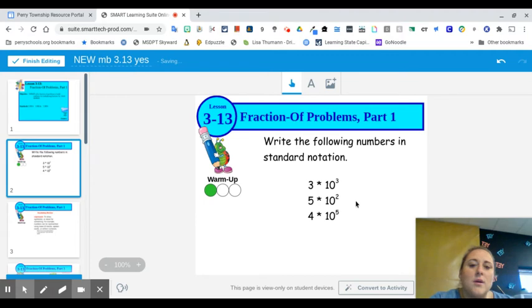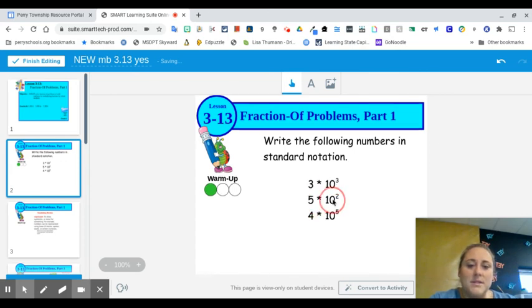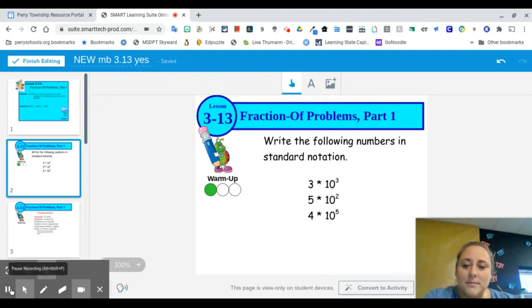Let's start off with our warm-up. We are to write the following numbers in standard notation. So our first one here, we have 3 times 10 to the 3rd power. Then we have 5 times 10 to the 2nd, and 4 times 10 to the 5th. Take a second and write those out on a piece of paper or a slate, and then we will check our work together.